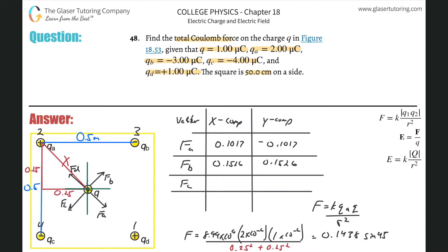So 8.99 times 10 to the 9th multiplied by 4 times 10 to the minus 6 times 1 times 10 to the minus 6, all divided by then 0.25 squared plus 0.25 squared. Multiply that then by the sine of 45, and what do we get? So here we're going to have now a negative X because this vector is in the negative X direction and the negative Y. So it's going to be now negative 0.2034 and then negative 0.2034.